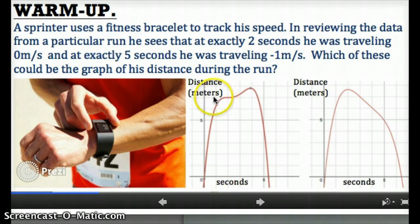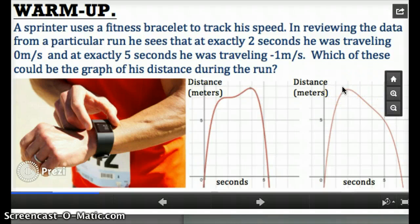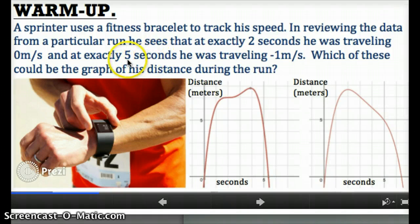And it turns out actually both of these graphs seem to have a zero slope at two seconds. In order to figure out which was the right one, then you probably had to look at the second slope. And if you check five seconds into his run, he's supposed to be traveling in the negative direction at a rate of one meter per second.